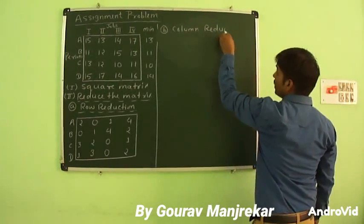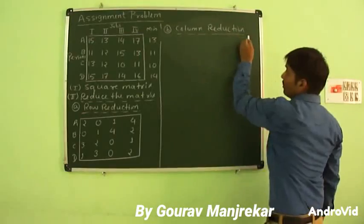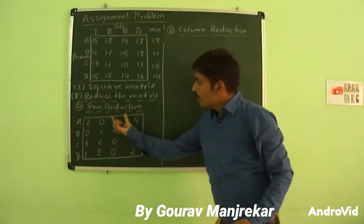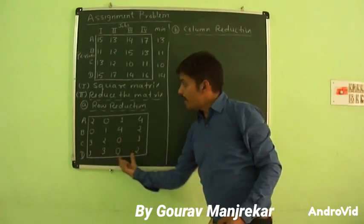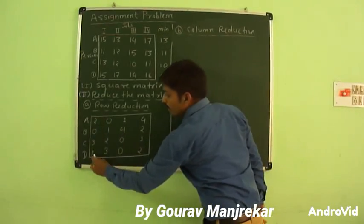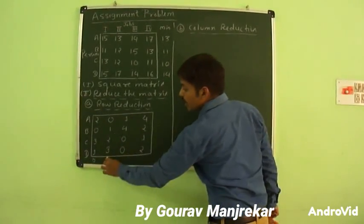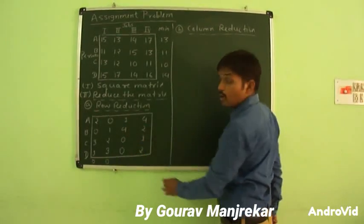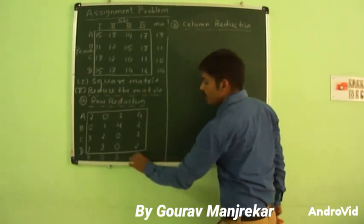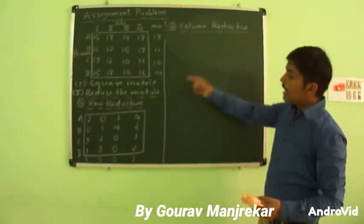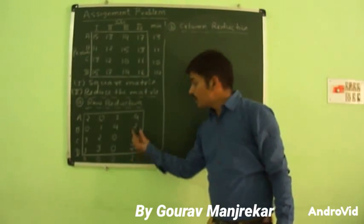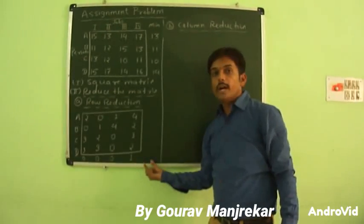Next we make column reduction. In column reduction we use the matrix from row reduction. The minimum element in the 1st column is 0, in the 2nd column is 0, in the 3rd column is 0, but in the 4th column the minimum element is 1. We select the minimum element from each column and subtract it from the corresponding column to get the column-reduced matrix.